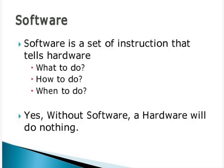Now you are clear with hardware. Next, we are going to see about software. What is software? Software is a set of instructions. What do you mean by instruction? It can be a rule, a command, or an order. Software is a set of instructions that tells hardware what to do, how to do, and when to do.